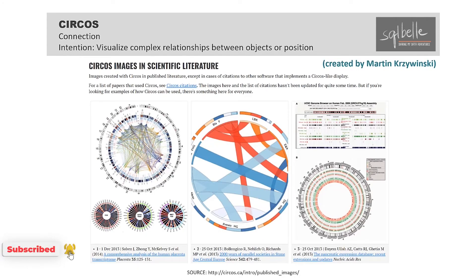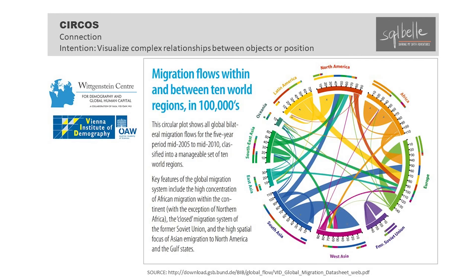Circos is a software package that visualizes data in a circular layout, helping to visualize and explore relationships. This package was created by BC Cancer Agency's Martin Krzywinski. It was originally designed to visualize genomic data and is widely used and cited in scientific journals. It has risen in popularity and has been used for different types of data from different sectors and industries. This example is created by teams from the Wittgenstein Center for Demography and Global Human Capital and the Vienna Institute of Demography, and it shows global migration patterns from 2005 to 2010. It has also been used to visualize customer behavior, urban planning, and even political debates.